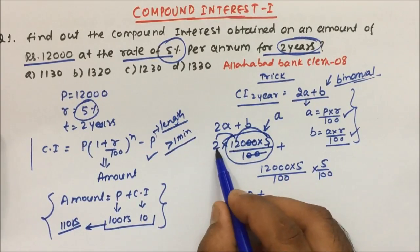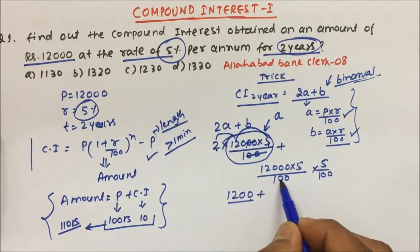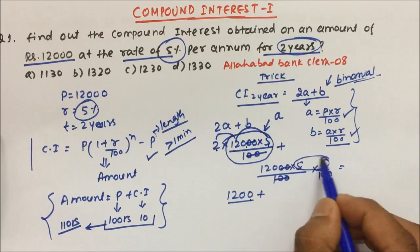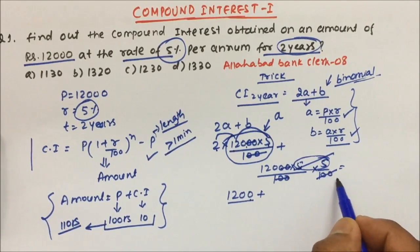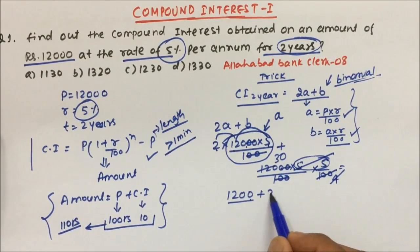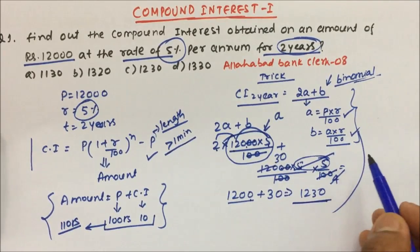120 into 5 is 600, and 600 into 2 is 1200. And again you see here, if you'll try to solve this, 2 zeros will cancel, 2 zeros. 5 into 5 is nothing but 25. 25 will cancel 100 by 4 times, and 4 will cancel this by 30 times. So 1200 plus 30 is nothing but 1230, and this will become my compound interest. See how easy is it to solve by using this formula, and my answer will be C. Option C will be my answer.